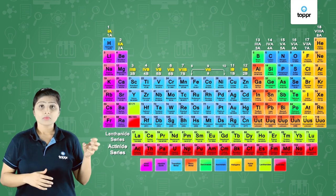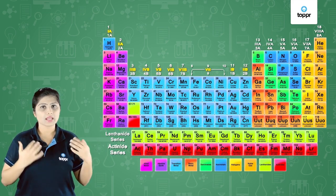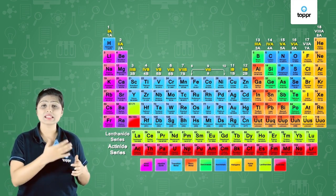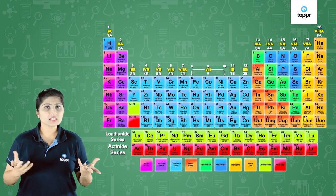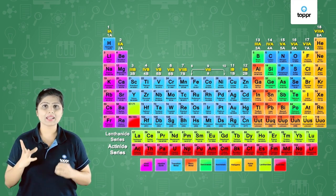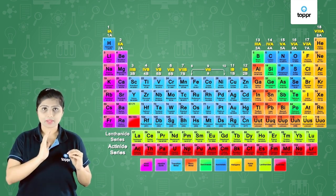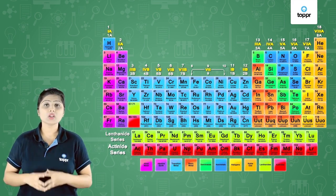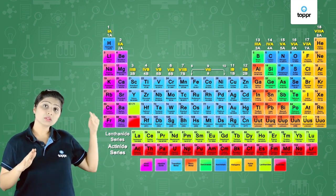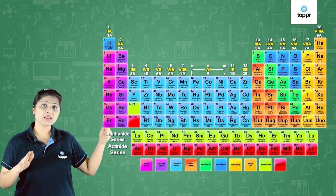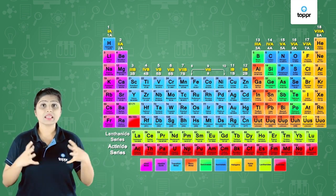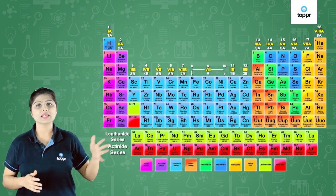When we come to group 13, those elements also have 3 electrons in the last orbit, so it is again labeled as Roman numeral III. Group 14 is labeled as Roman numeral IV, 15 as V, 16 as VI, 17 as VII and 18 as VIII. To differentiate normal elements from transition elements, we label them as A and B. All normal elements are labeled A and all transition elements are labeled B. So group 1 is labeled 1A, group 2 as 2A. From group 13 onward: 3A, 4A, 5A, 6A, 7A and 8A. Groups 3 to 12 are labeled 3B, 4B, 5B, 6B and so on.